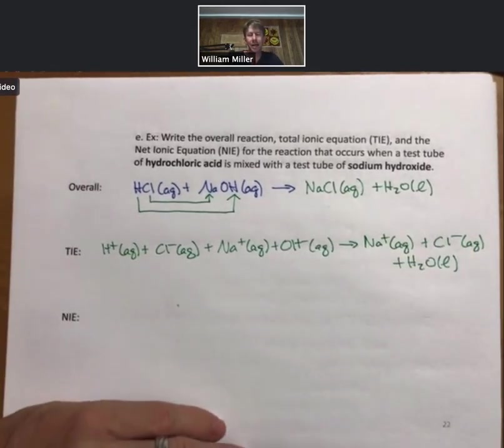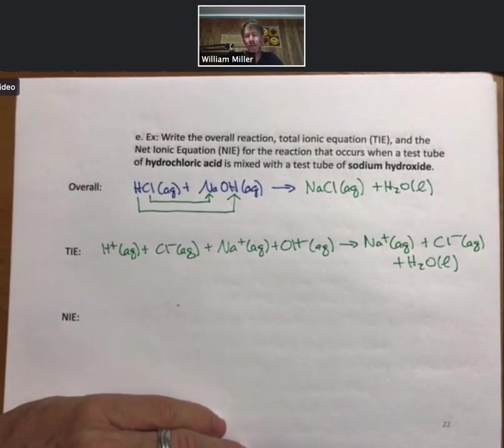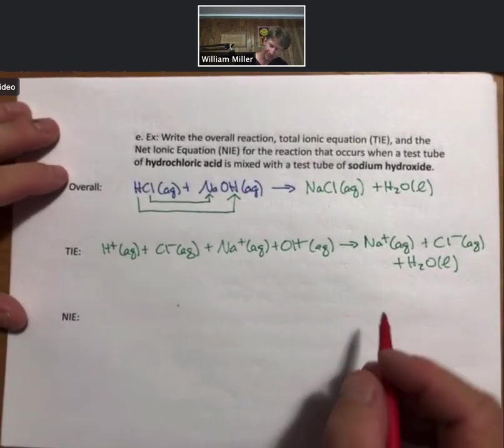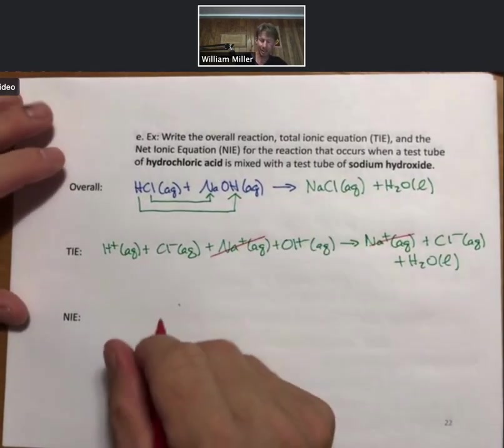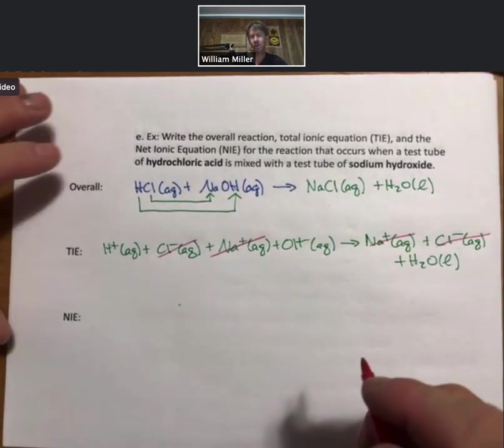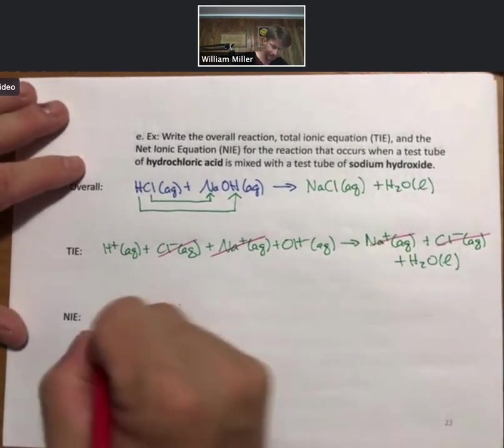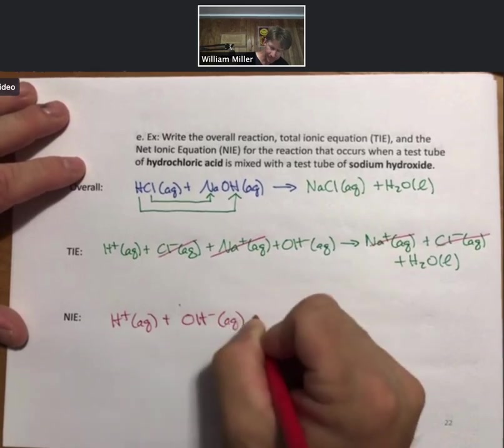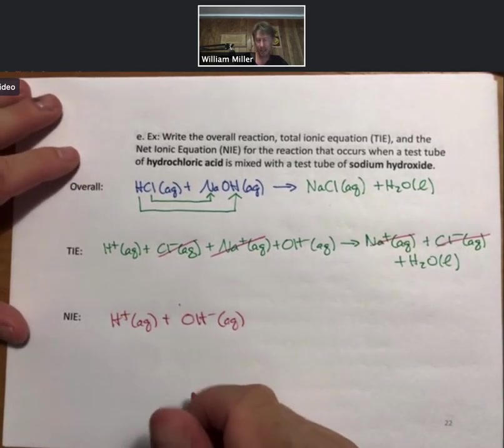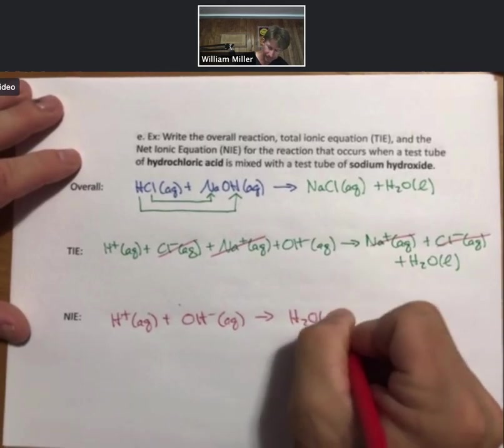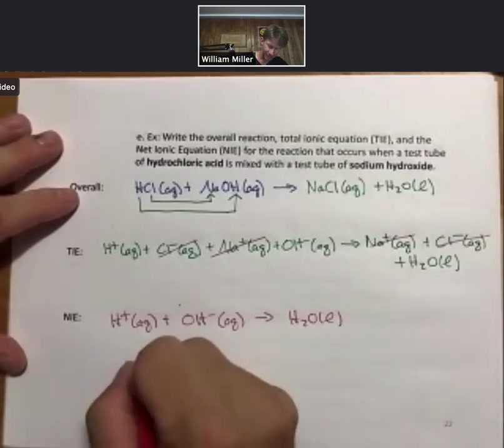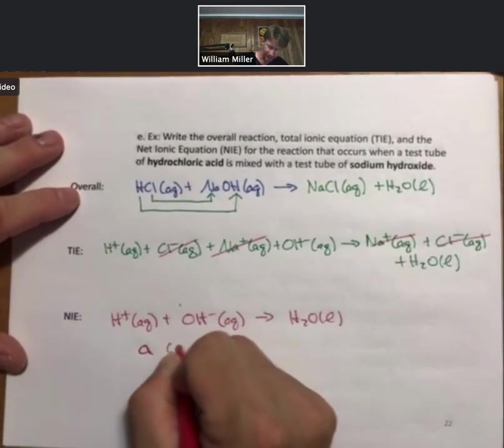Sodium and chloride become aqueous ions with their own hydration shells. Nothing changed for them, in fact. But H2O is a liquid. And when we go through and cancel out the things that are the same, our spectator ion sodium and our spectator ion chloride both drop out. We're left with hydrogen ion and hydroxide ion forming water. This is a chemical reaction. And for this chemical reaction, a covalent bond is formed.